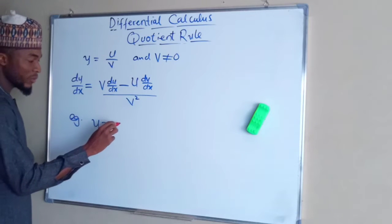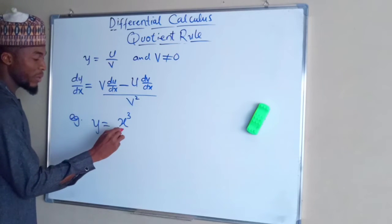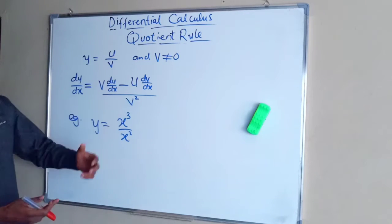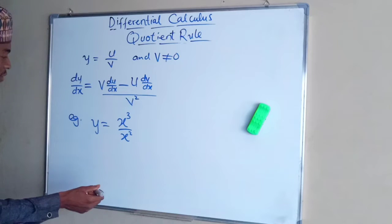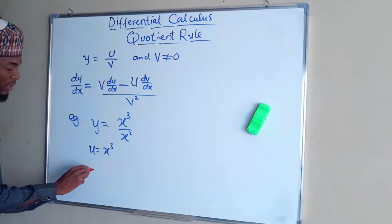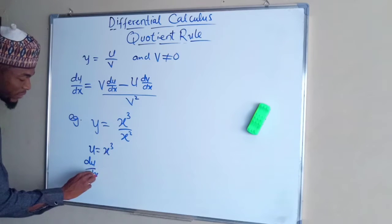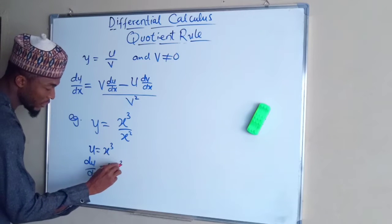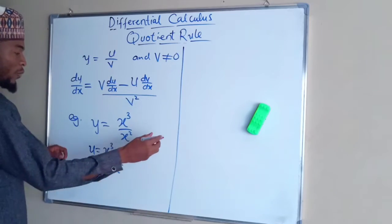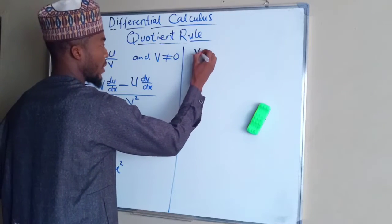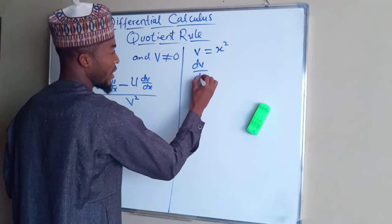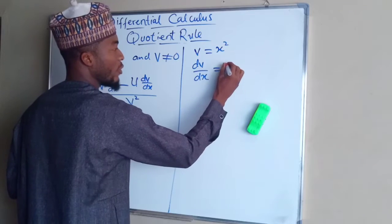Example: suppose y equals x cubed divided by x squared. To differentiate this function, you can either simplify or apply the formula directly. Let u equal x cubed, then du/dx equals 3x squared. For v, let v equal x squared, therefore dv/dx equals 2x.